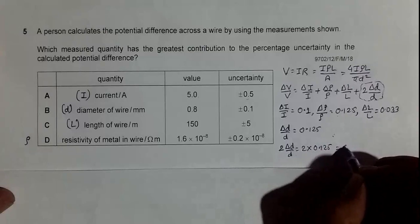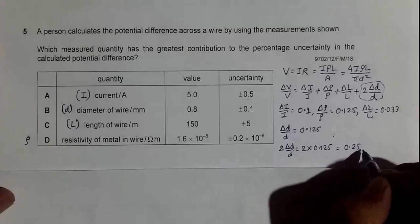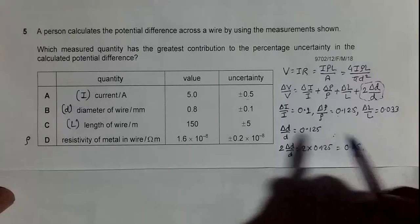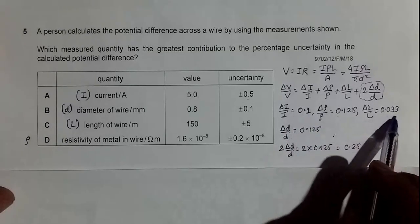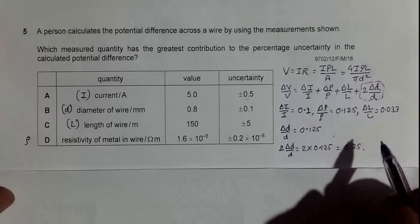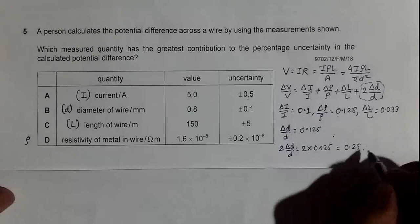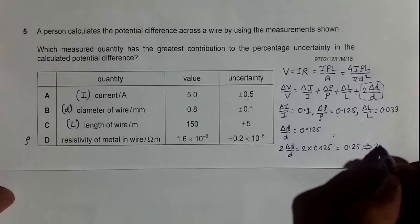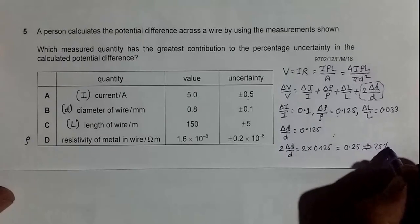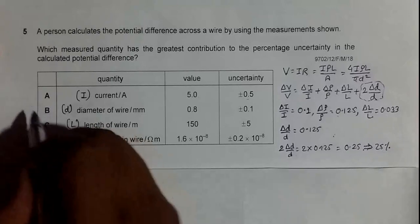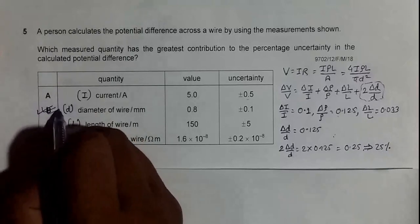So if I convert into percentage, this will be 25%, this will be 10%, this will be 3.3%. So the highest contribution is given by this diameter thing, which will convert into 25%, which is the highest contribution. So the answer should be choice number B in this question.